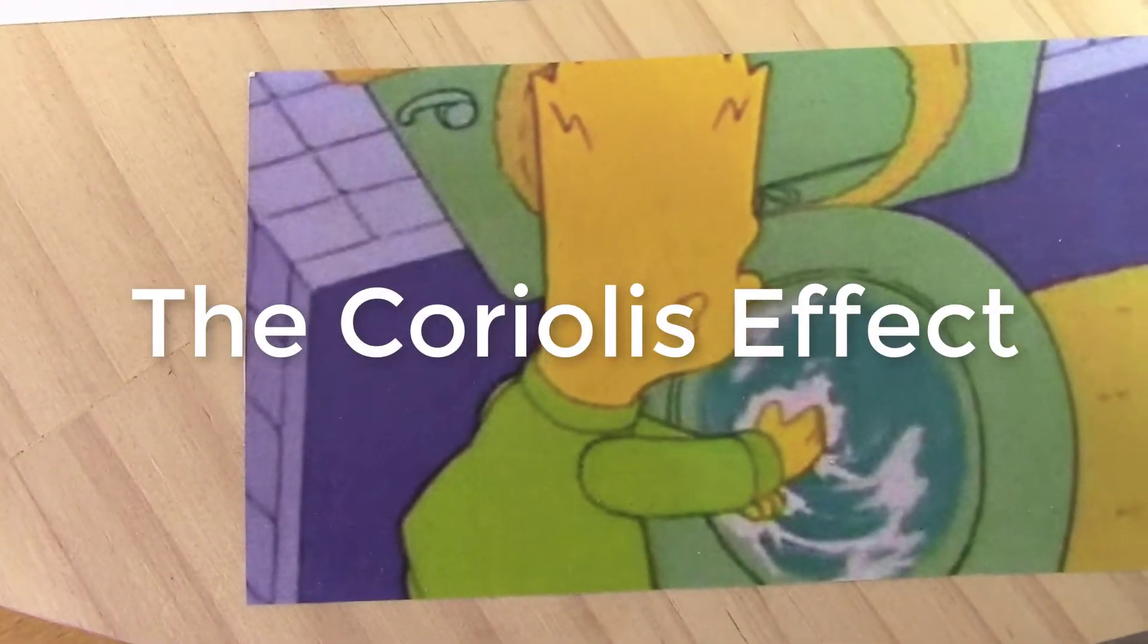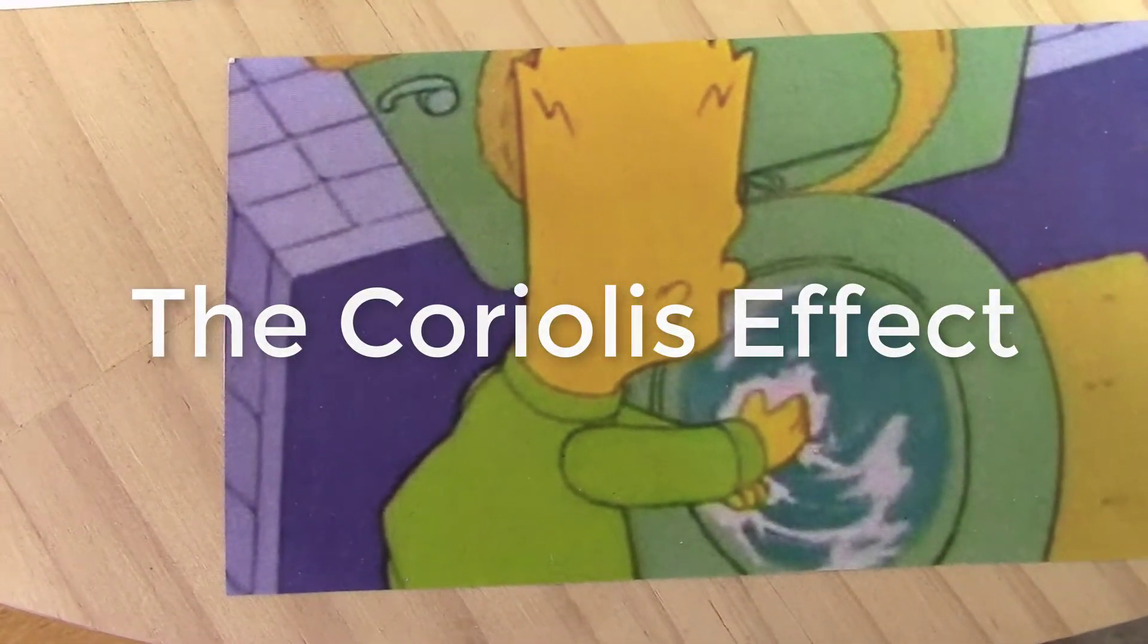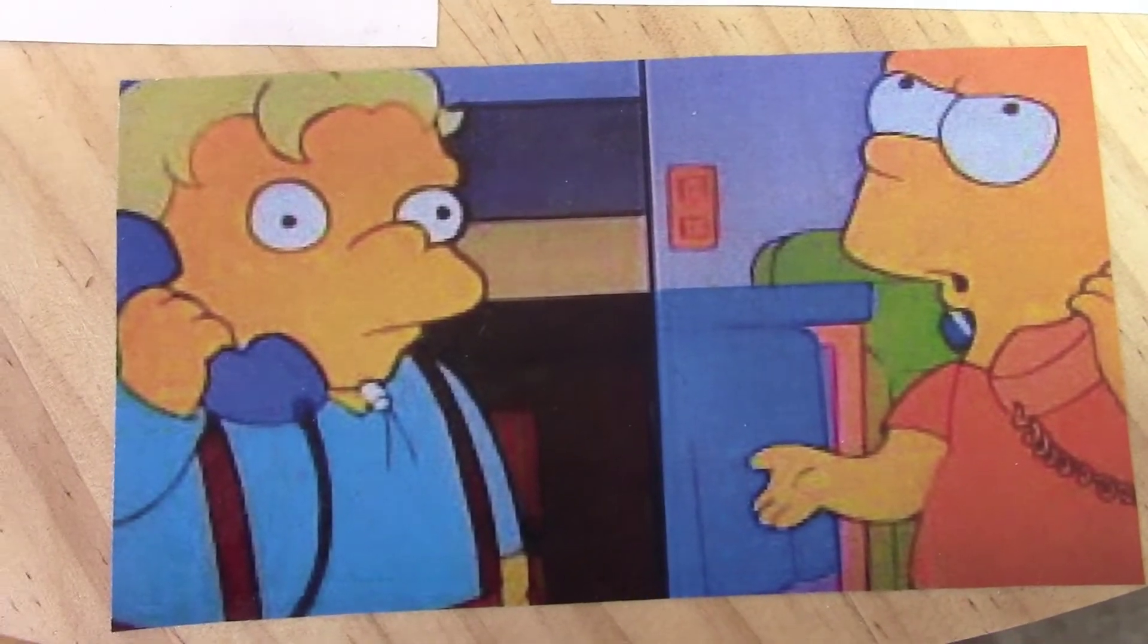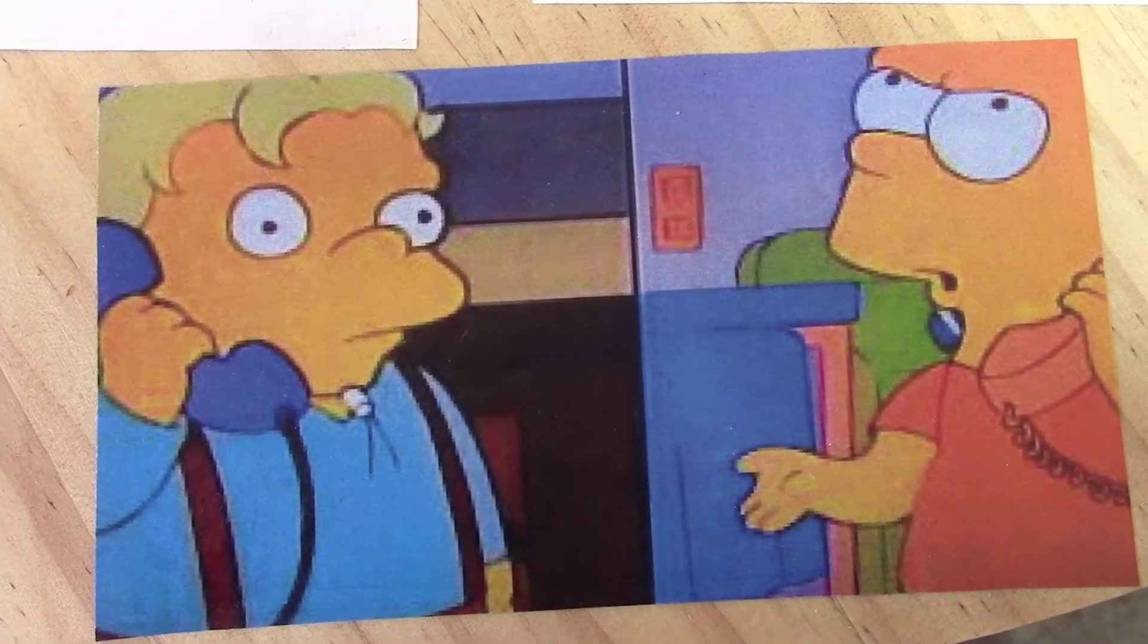You might have seen that Simpsons episode where Bart flushes the toilet and notices the water going one direction, and then he rings a random person on the other side of the world, which happens to be Australia, and gets someone to flush the toilet there to check it out and then asks them to do it in their neighbor's house, which turns out to be a long way away.